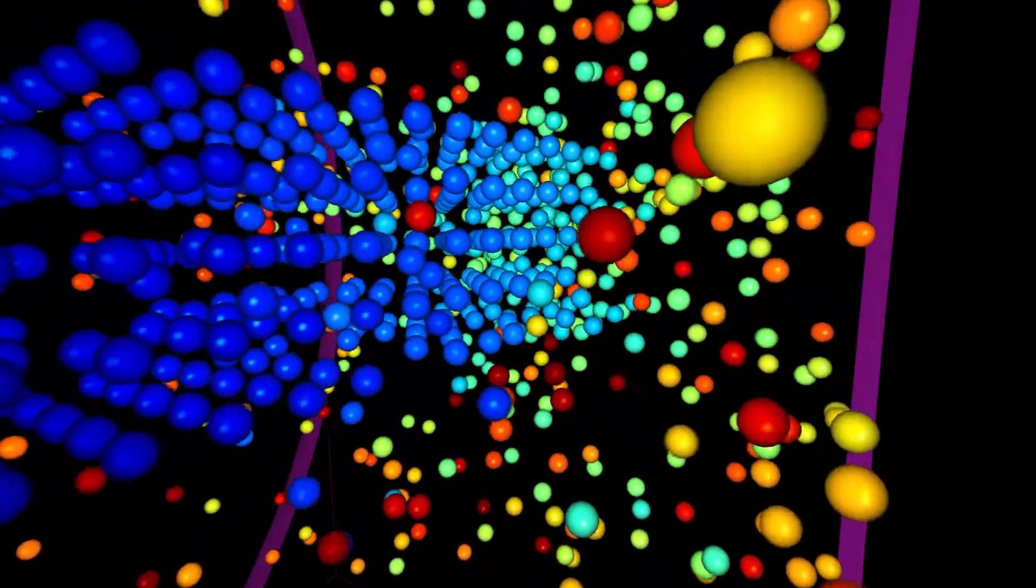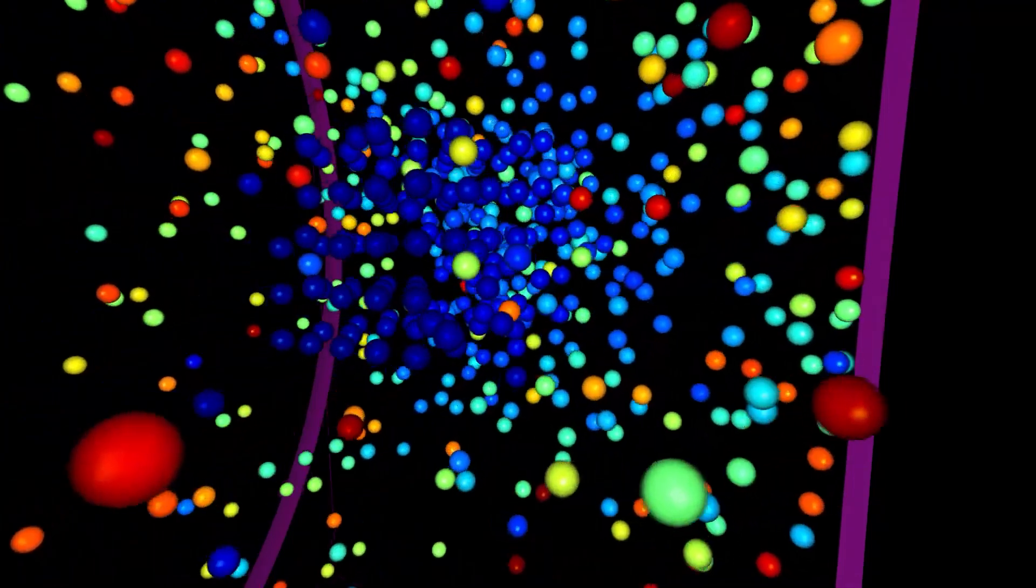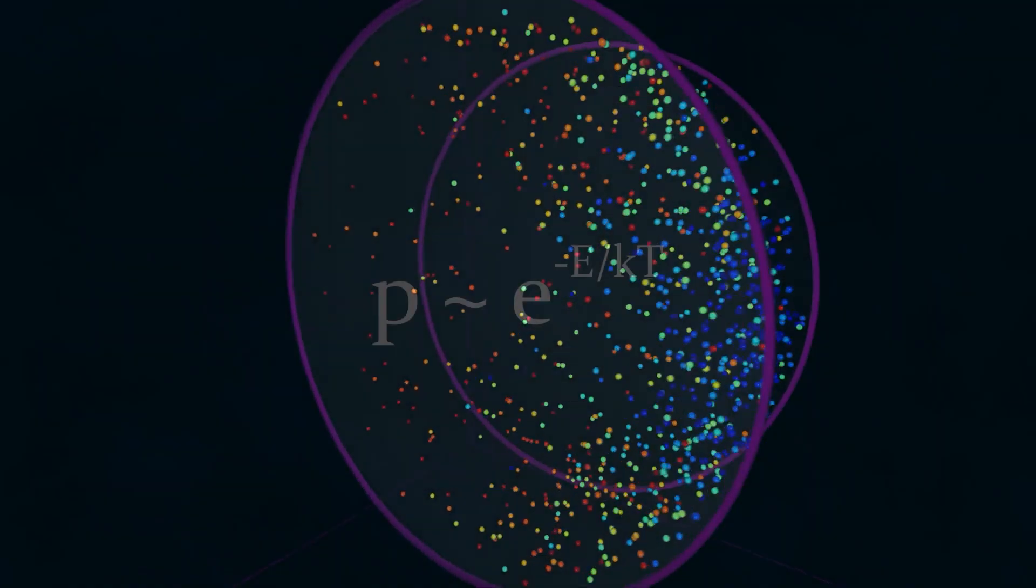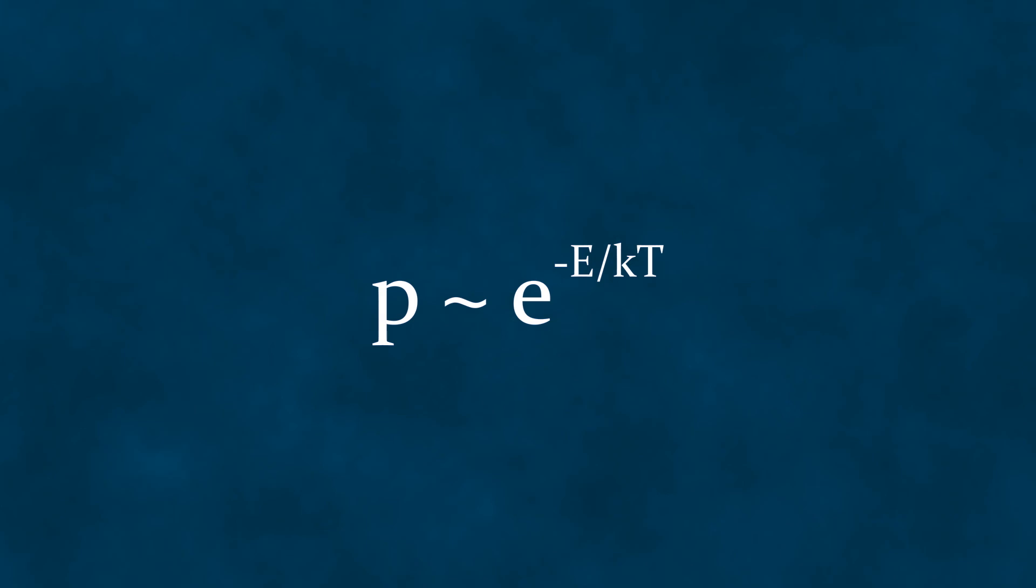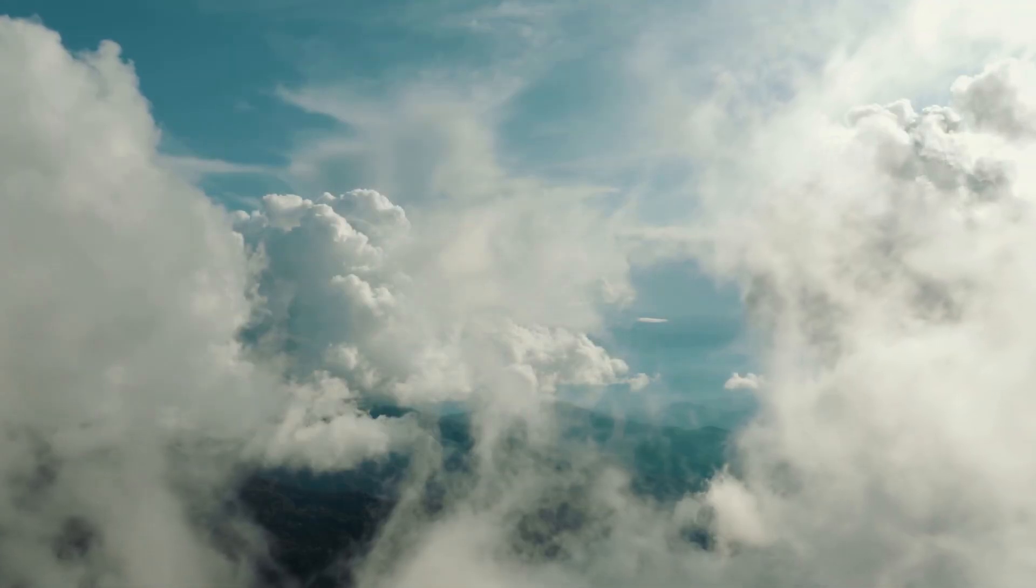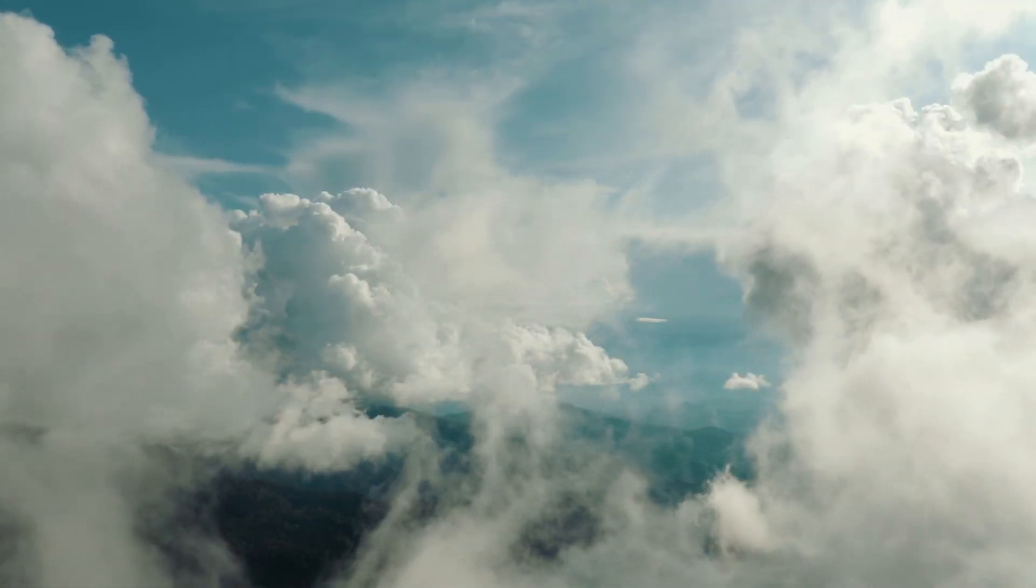This logic was found in statistical physics, specifically in one of its key formulas known as the Boltzmann distribution. This formula describes the probability of finding a particle with a certain potential energy in an ensemble of many particles at a given temperature. This probability is proportional to the following value. The higher the energy of the particle we are looking for, the less likely we are to find it. Or, in other words, the lower the concentration of such particles in the ensemble.